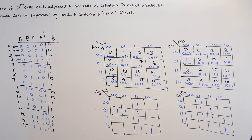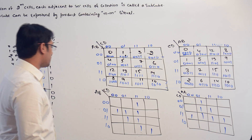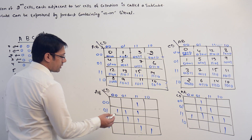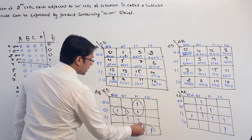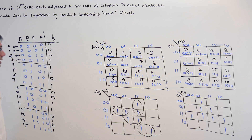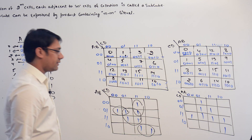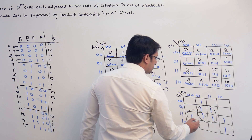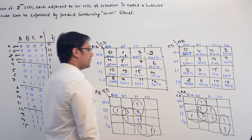We have these 2 kmaps. Now if you take these kmaps, what are the subcubes we can make? The biggest subcubes — we have discussed about the biggest subcubes which we can make. This can be 1 subcube, this can be 1 subcube, this can be 1 subcube, as well as this can be 1 subcube.